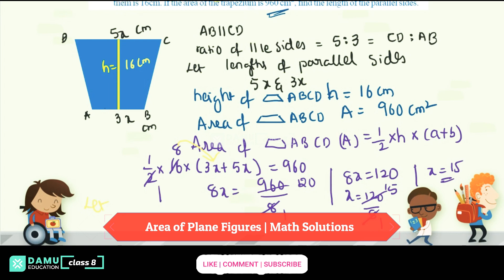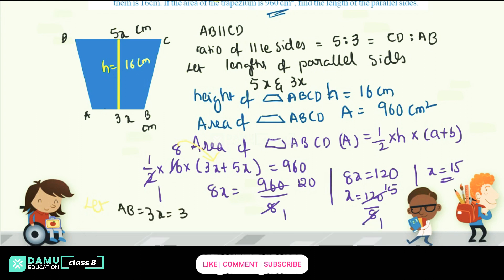So the length AB equals 3x, that is 3 into 15, equals 45 centimeters. And CD equals 5x, that is 5 into 15, equals 75 centimeters. So 3x equals 45 centimeters and 5x equals 75 centimeters.